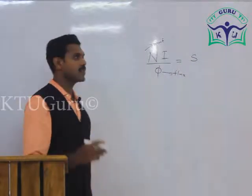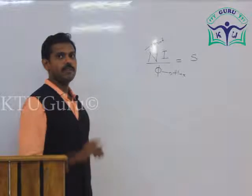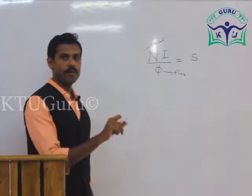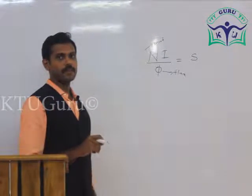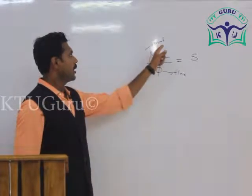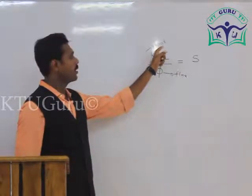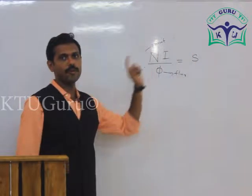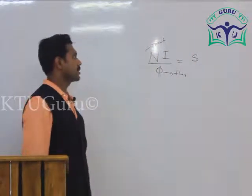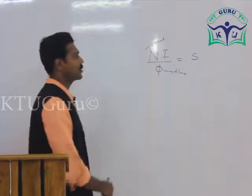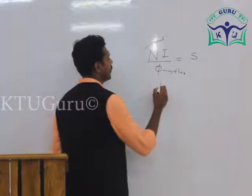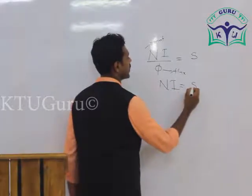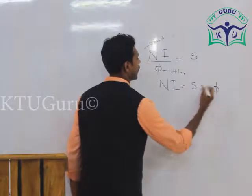Similar to the electric circuit where V divided by I equals R, here MMF divided by flux equals reluctance S. From this expression, NI equals reluctance into flux phi.